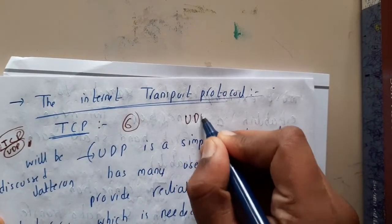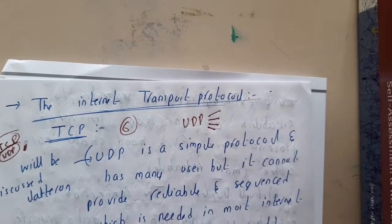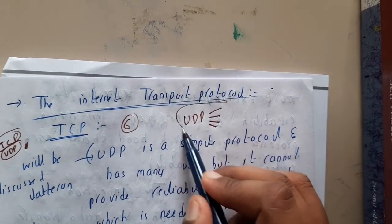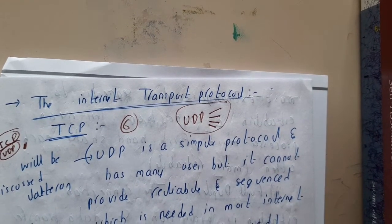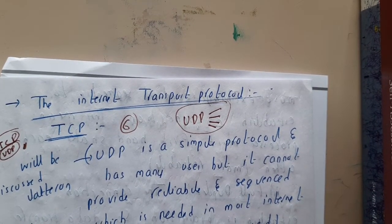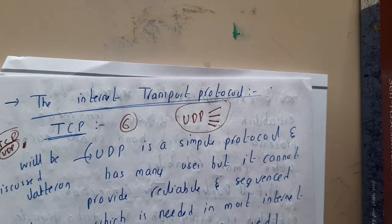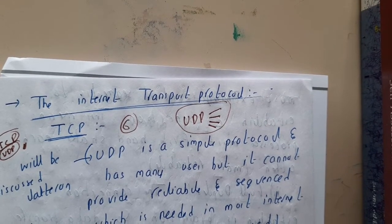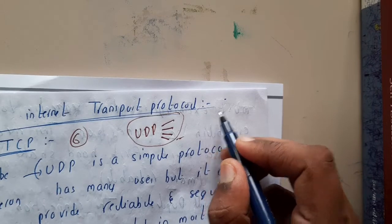UDP is connectionless, so it can take multiple paths. There is no need to establish a connection; you can send data directly. The packets are received somehow at their destination, and if you get a negative acknowledgement or any indication they were not received, you retransmit them — that is how UDP works.